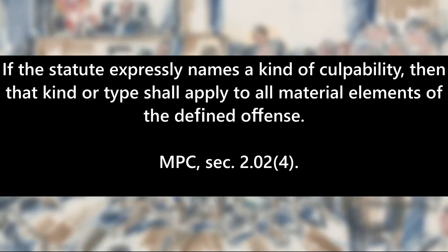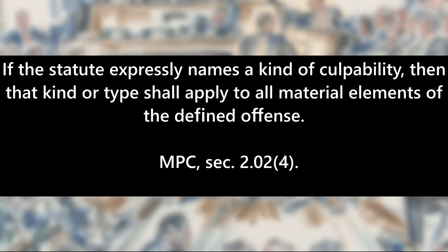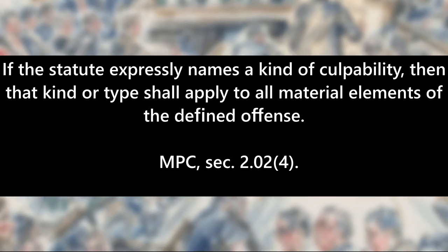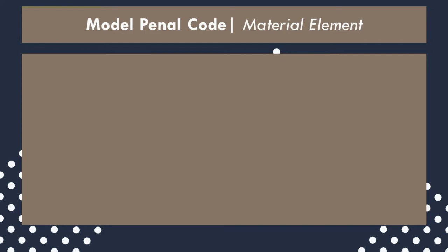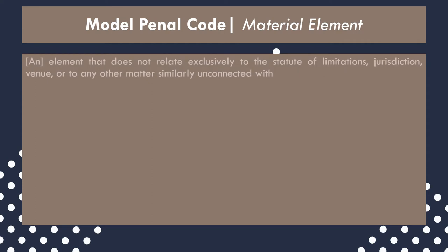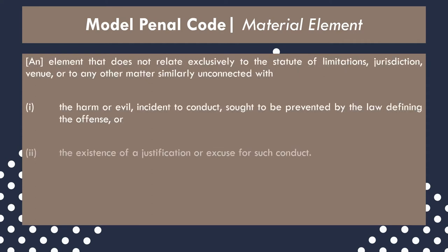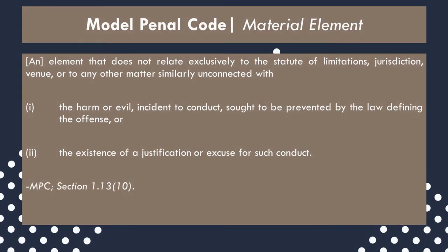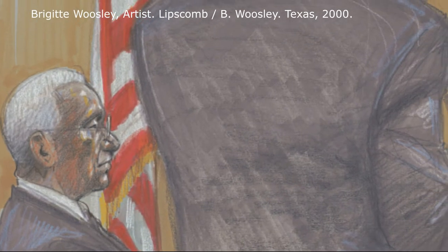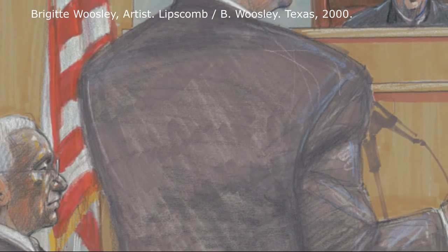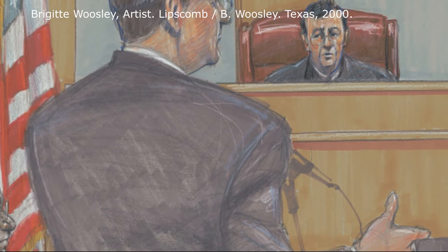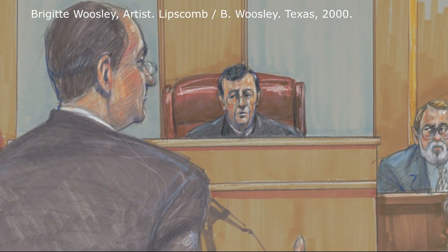Section 2.02, subsection 4 of the MPC provides that if the statute expressly names a kind of culpability, then that kind or type shall apply to all material elements of the defined offense. Section 1.13, subsection 10 defines the term material element as an element that does not relate exclusively to the statute of limitations, jurisdiction, venue, or any other matter similarly unconnected with the harm or evil incident to conduct sought to be prevented by the law, or the existence of a justification or excuse for such conduct. A material element can be thought of as the terms composing the spirit of the statute — the concept the statute is attempting to regulate or prescribe.